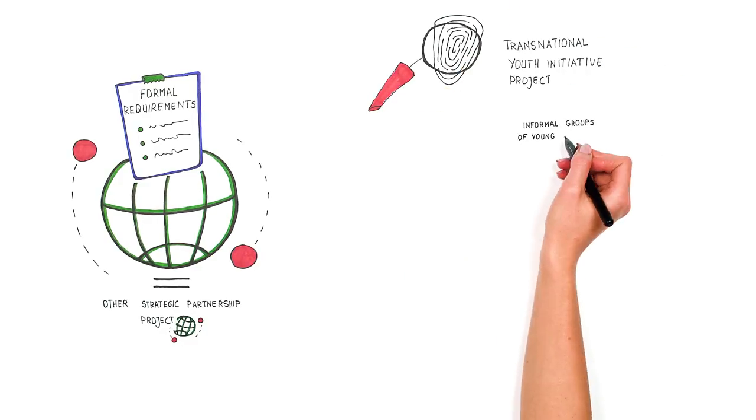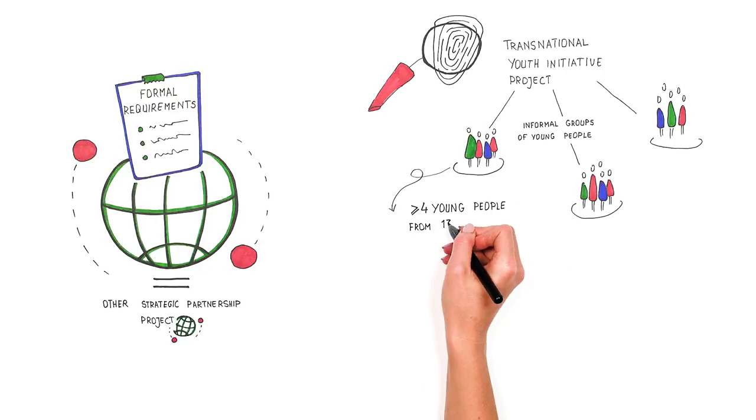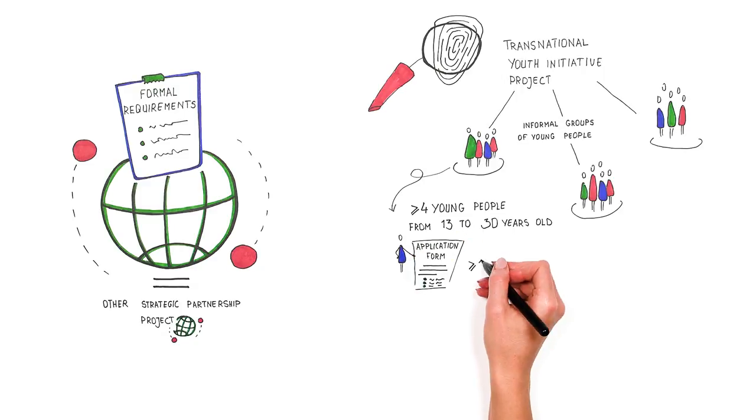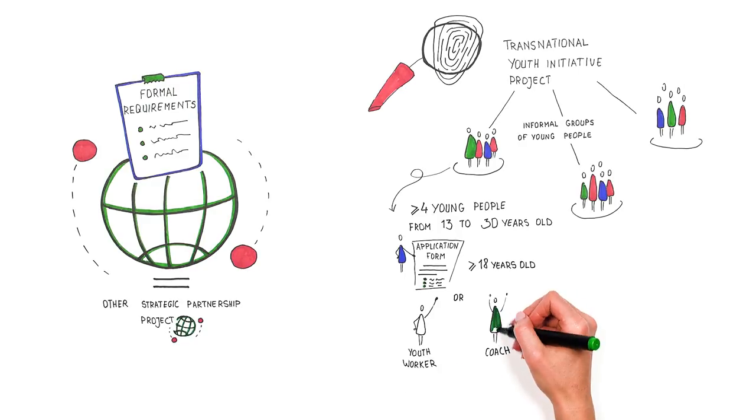Transnational youth initiative projects are mainly intended for informal groups of young people. An informal group means at least four young people from 13 to 30 years old. The person formally applying needs to be 18 years old or older. If all young people are minors, the group needs to be supported and represented by an adult, for example a youth worker or coach.